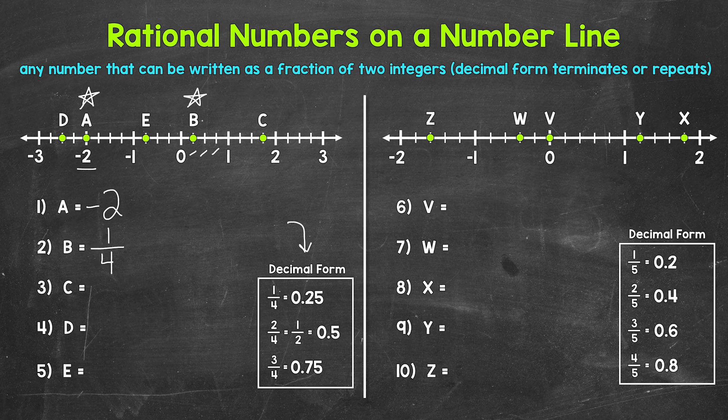Fourths are common, so knowing the fractional and decimal forms will be helpful. One fourth equals twenty-five hundredths (0.25). Two fourths, which is one half, equals five tenths (0.5) — we can write it as 0.50 but zeros to the right of a decimal are not needed. Three fourths equals seventy-five hundredths (0.75).